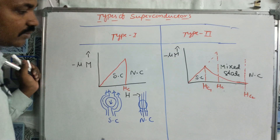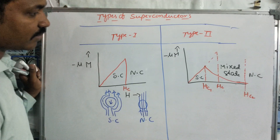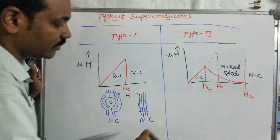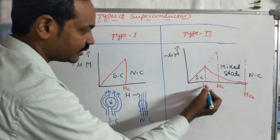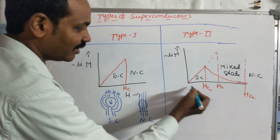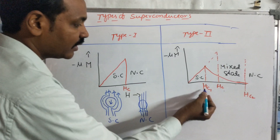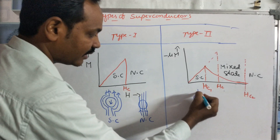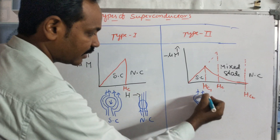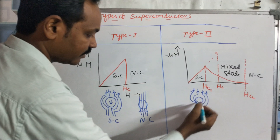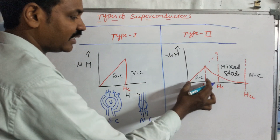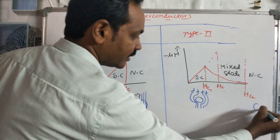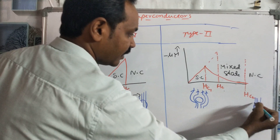When we turn on the magnetic field, we observe the state at Hc1 — critical field 1. Before Hc1, the magnetic flux lines are completely repelled. This region is perfectly in the superconducting state.